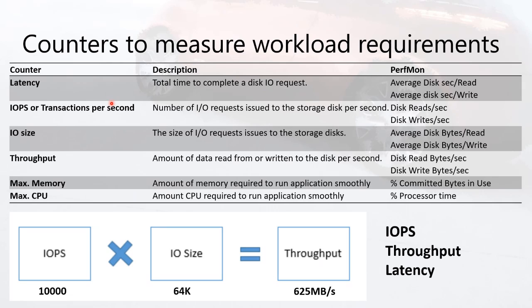Let's talk about the second counter: IOPS, which is the number of requests to your storage per second. You have disk reads and disk writes there. You really need to figure this out because you need to find the right IOPS measure for your Azure SQL Server, because choosing the VM size on Azure is based on your IOPS and throughput. It's really important to understand your current workload, and to set up and collect your performance baseline prior to migration.